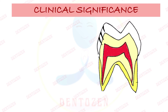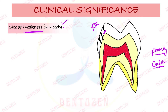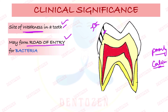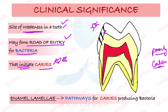Clinically, enamel lamellae are significant because they are poorly calcified and therefore weak. Bacteria can enter through these lamellae and initiate caries. So enamel lamellae are sites of weakness in a tooth and act as pathways for caries-producing bacteria to enter and start caries — a very important exam point.